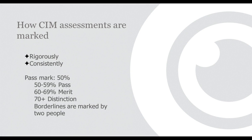Borderline marks — between a fail and a pass, a pass and a merit, or a merit and a distinction — are always marked by two examiners, usually the examiner and a senior examiner. So when people ask whether it's worth requesting a remark after getting 49, it's already been remarked. You have actually convinced two examiners that it shouldn't pass. The chances of a remark changing anything are very unlikely because of the rigorous process that goes into the marking.